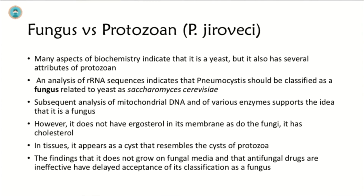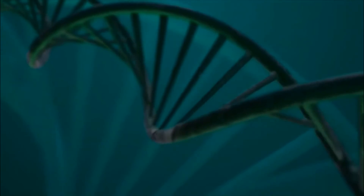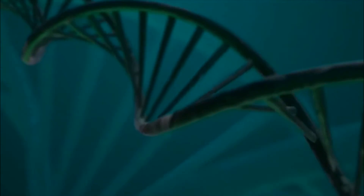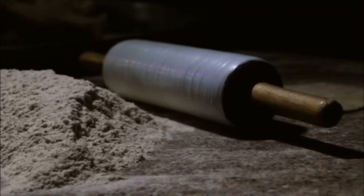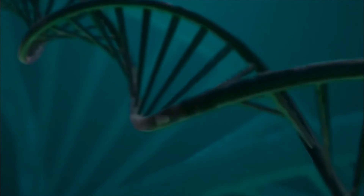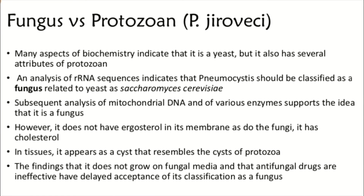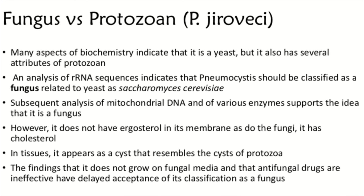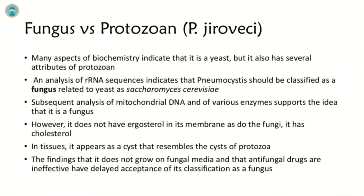Fungus versus protozoan — whether Pneumocystis jirovecii is a fungus or a protozoan. Many aspects of biochemistry indicate that it is a yeast, but it also has several attributes of a protozoan. An analysis of ribosomal RNA sequences indicates that Pneumocystis should be classified as a fungus related to yeast such as Saccharomyces cerevisiae. Subsequent analysis of mitochondrial DNA and of various enzymes supports the idea that it is a fungus. However, it does not have ergosterol in its membrane as do the fungi — it has cholesterol. In tissues, it appears as a cyst that resembles the cysts of protozoa.